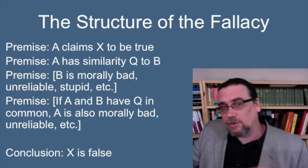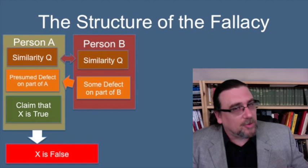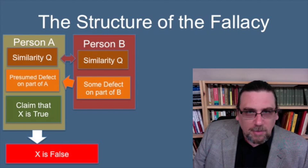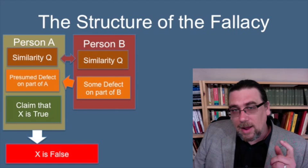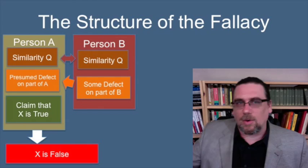The conclusion is that X is false. Notice you need those two implicit premises to get from the other premises to that conclusion. We can represent this graphically: person A and person B — person B has some defect we're trying to transfer to person A, because we want to reject A's claim that X is true. We use the similarity between them as a kind of bridge to accomplish this.